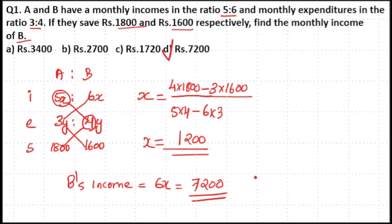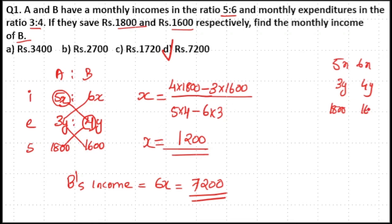Now if you want to find out the y value directly from this method, you can apply: 7200 minus 1600 will be 4y, and you can find out y value from that. Or if you find out y value directly from this method, just write down 5x, 6x, 3y, 4y, then 1800 and 1600.